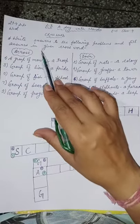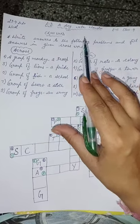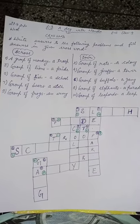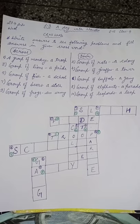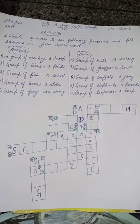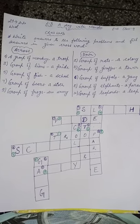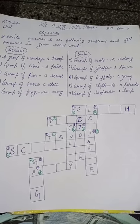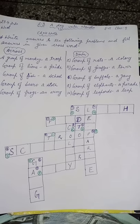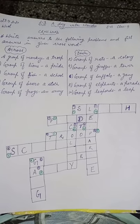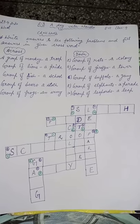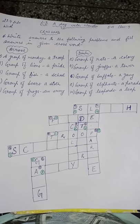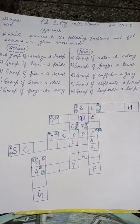This chapter, 'A Day with Nandu,' basically deals with the lifestyle of animals — how do they live? Most of the animals used to live in groups, and we have different names for the different kinds of groups for the different kinds of animals.